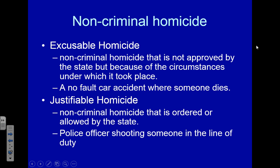A justifiable homicide is one ordered or sanctioned by the state — for example, an executioner carrying out capital punishment, or a police officer who shoots somebody in the line of duty. Anytime there's a homicide there's going to be an investigation. If I hit an icy patch and roll over and the investigation reveals I hadn't been drinking or speeding, it'll likely be ruled excusable homicide. But if the investigation reveals I had been drinking or speeding, they may charge involuntary manslaughter. The investigation determines how these crimes are classified.